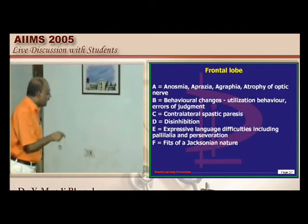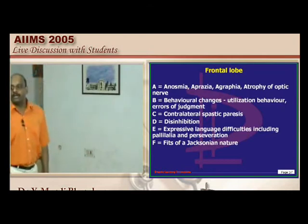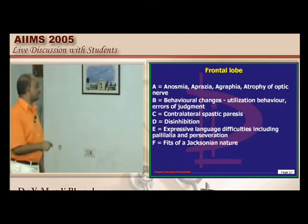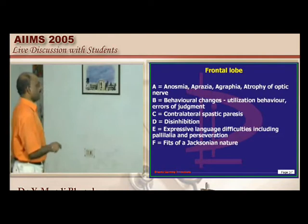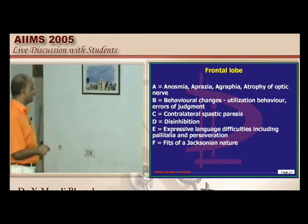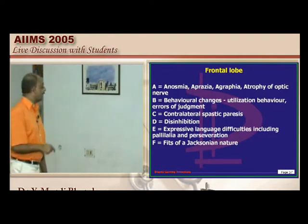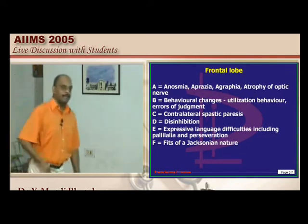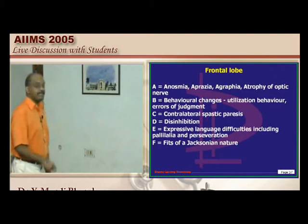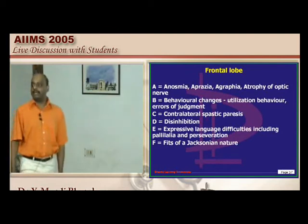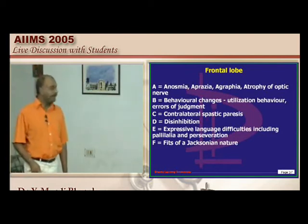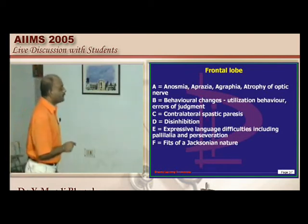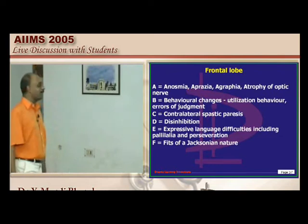Given clinical features — anosmia, apraxia, agraphia, behavioral changes, contralateral spastic paralysis, disinhibition of bladder, personality changes, expressive language defects (Broca's aphasia), and Jacksonian seizures — which lobe? It is the frontal lobe.